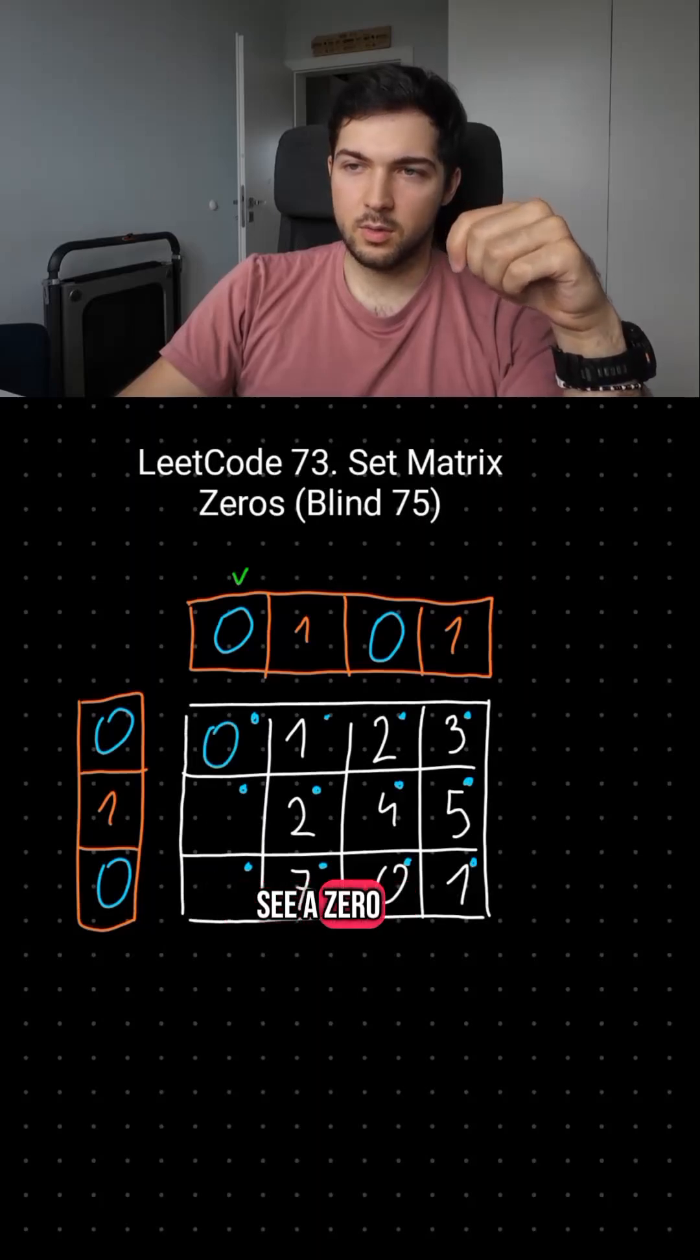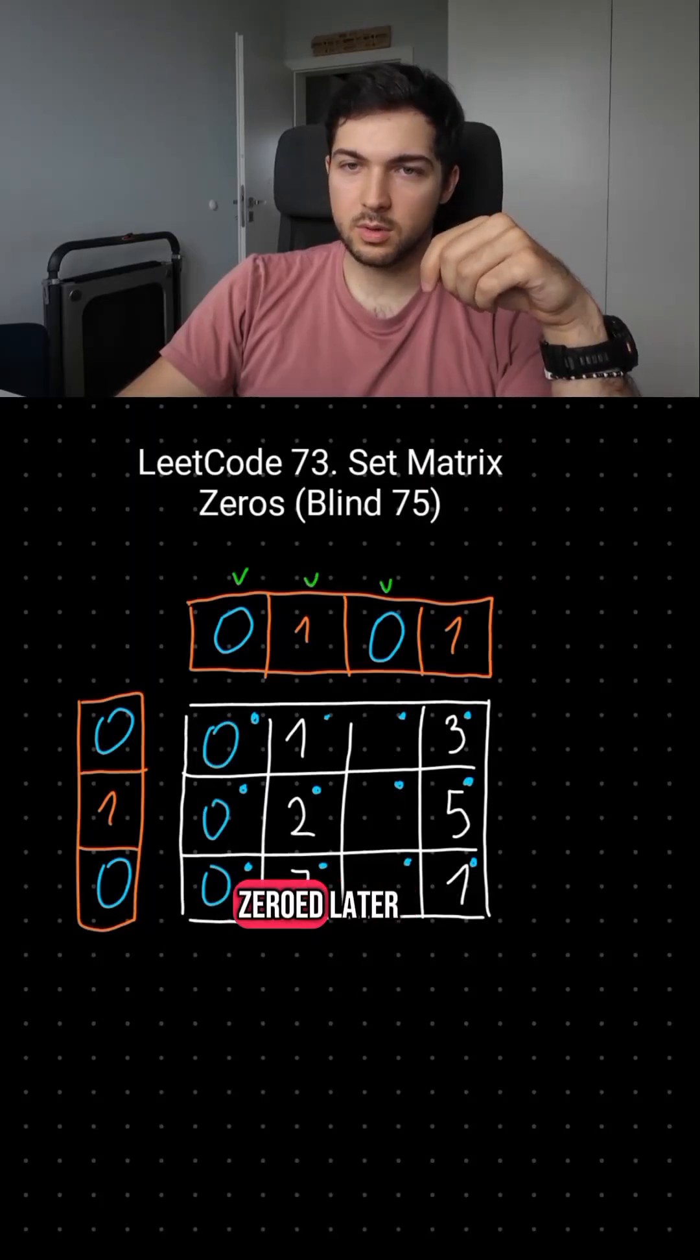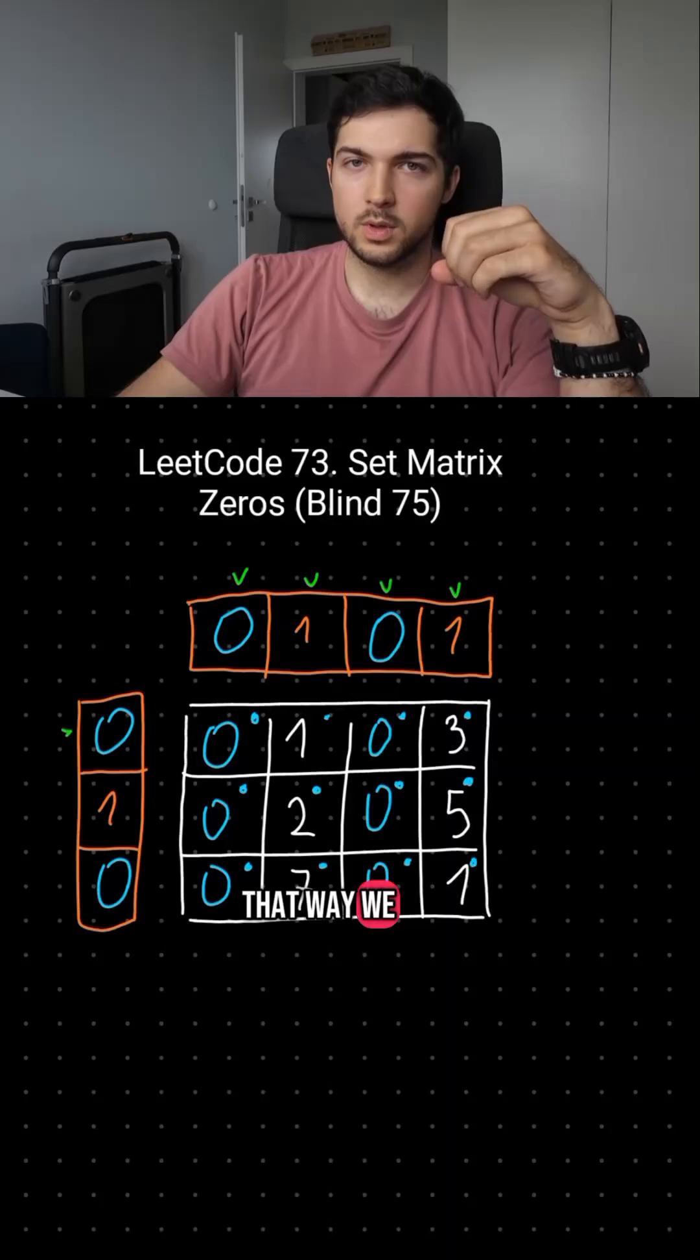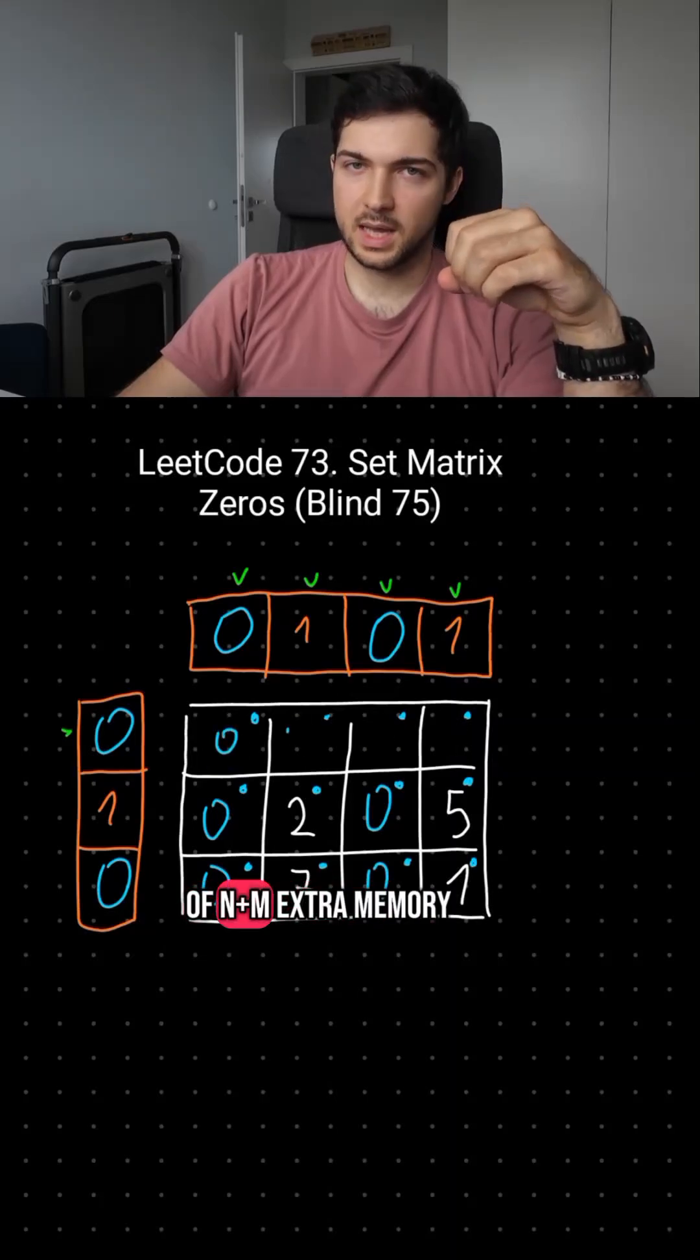Basically if we see a zero, then we set its row and column to be zeroed later. That way we use only O of n plus m extra memory.